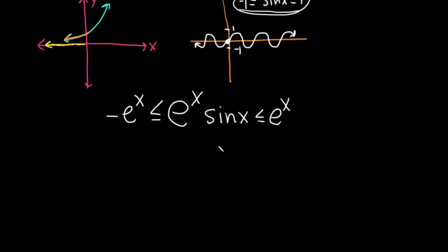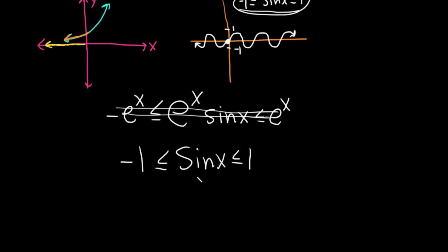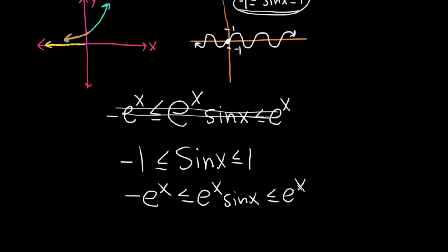If that's confusing, you can think about it another way. Start with the inequality: sine x is less than or equal to 1 and greater than or equal to negative 1. Then ask what's missing to get the function in our limit — we're missing the e to the x. So multiply each piece of this inequality by e to the x. You get negative e to the x ≤ e to the x times sine x ≤ e to the x. What you do to one part of the inequality, you have to do to all parts.